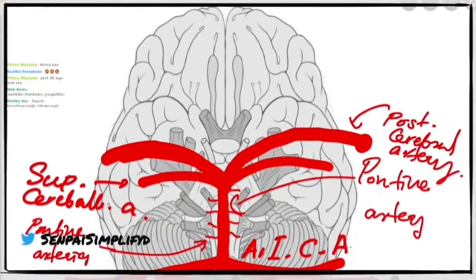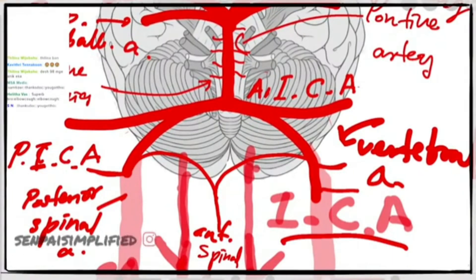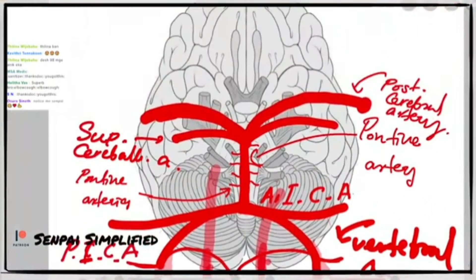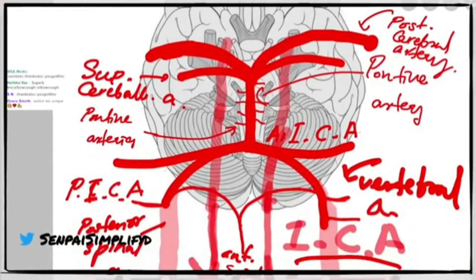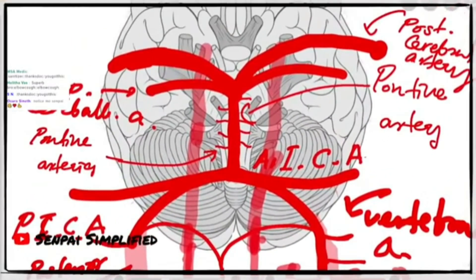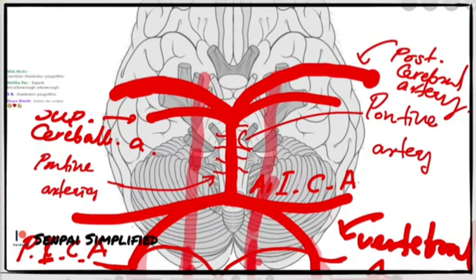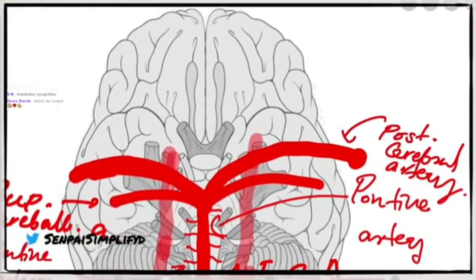Let's go back to the internal carotid artery. These internal carotid arteries travel all the way up within the carotid sheath. The vertebral arteries traveled through the foramen transversarium of C1 to C6 vertebrae, while the internal carotid artery travels in the carotid sheath. It enters the cranium through the carotid canal, which is found in part of the sphenoid bone, and now you have the internal carotid artery inside the brain.